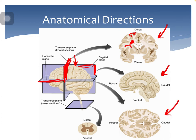This right here would be the horizontal plane — what we call the axial view in an MRI. If we cut the brain horizontally straight across, that gives us this sort of view of the brain.